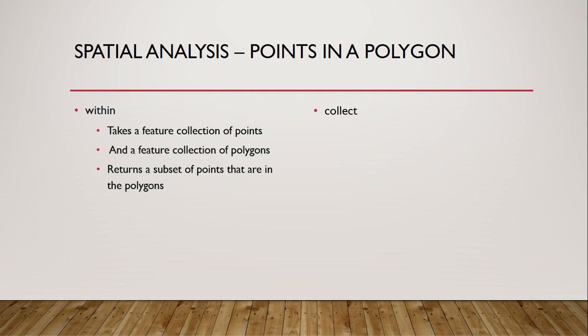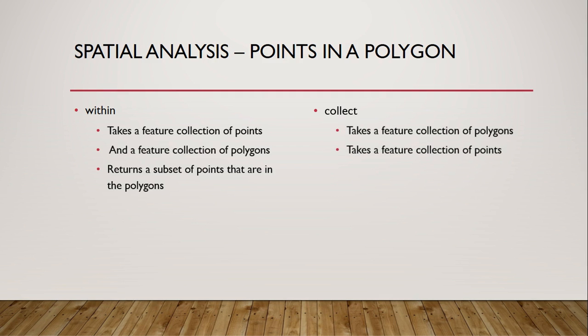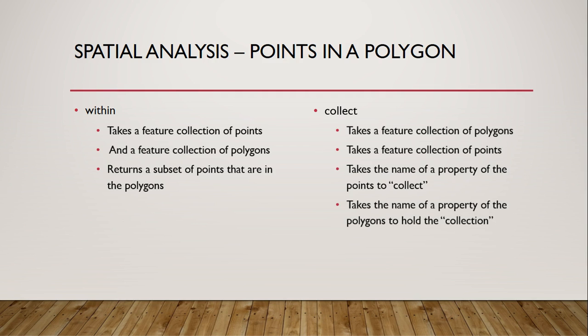Turf also provides another very handy method called collect. The collect method takes a feature collection of polygons and a feature collection of points, but collect doesn't return points. Instead you pass it a third parameter — the name of a property of the points feature class that you want to collect — and a fourth parameter, the name of a property in the polygons that will hold the collection. This property doesn't have to exist; if it doesn't exist, Turf will add it to the properties, and this property will hold an array of all the values of the specified property for all the points within that polygon.